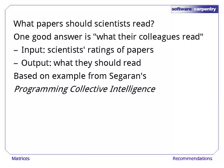Every year, scientists produce several hundred thousand papers. An important question for every scientist is which papers they should read. Typically, one should read papers that their colleagues read and found useful. We will build a recommendation tool that generates a list of papers that an individual should read based on their previous ratings and the ratings of other people in the field.